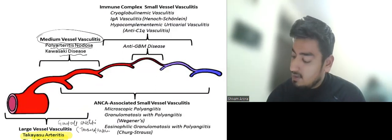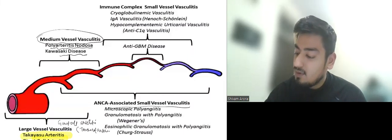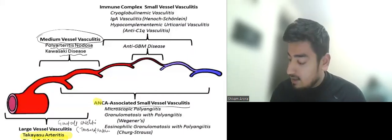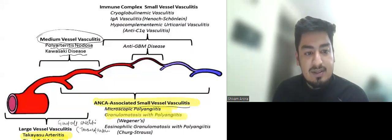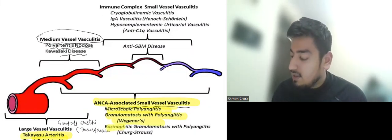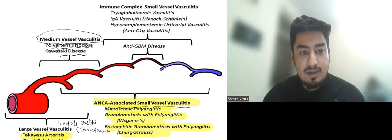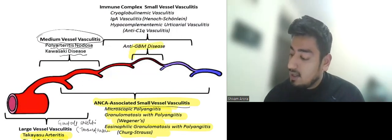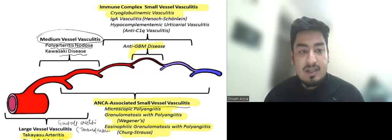And then we have small vessel vasculitis which are classified as ANCA associated small vessel vasculitis which is rather important. Like Microscopic Polyangiitis, Granulomatosis with Polyangiitis which is also known as Wegener's disease, and Eosinophilic Granulomatosis with Polyangiitis which is also known as Churg-Strauss. And other than that we have immune complex mediated small vessel vasculitis like Cryoglobulinemia vasculitis,